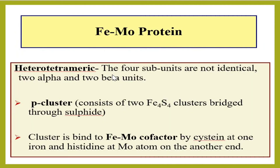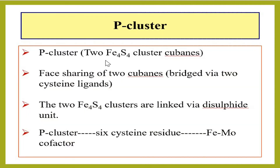The FeMo protein is a heterotetrameric protein with two alpha and two beta subunits. It has two components: the P-cluster and the FeMo cofactor. These two are joined via cysteine at one iron of the FeMo cofactor and via cysteine at the molybdenum atom of the FeMo cofactor.